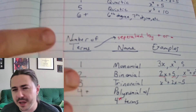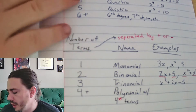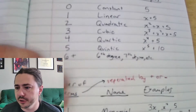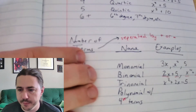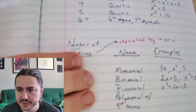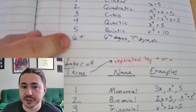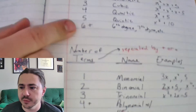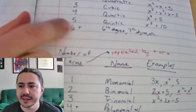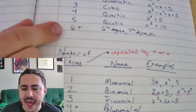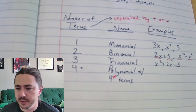There are some combinations that won't really work, but for the most part you're going to name it based on degree and then based on number of terms. If you've got something with degree 10 and 20 terms, you could say it's a 10th degree polynomial with 20 terms.